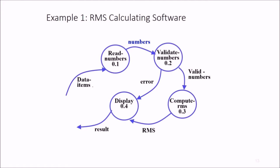We need to read numbers, then validate numbers. If valid numbers are there, compute the RMS and display it. But if validation is unsuccessful, some error has to be displayed and the result is utilized by the user.